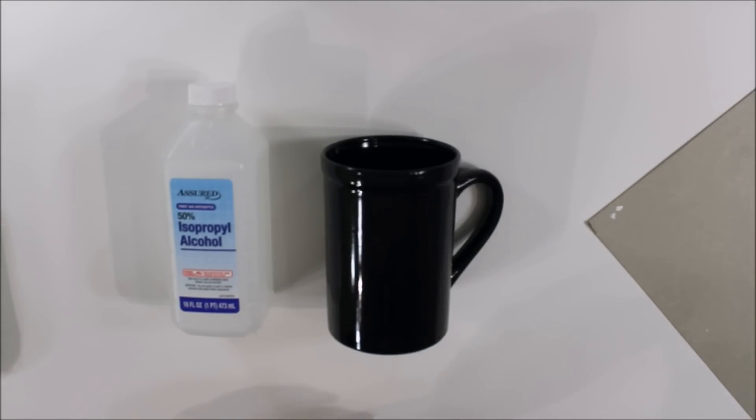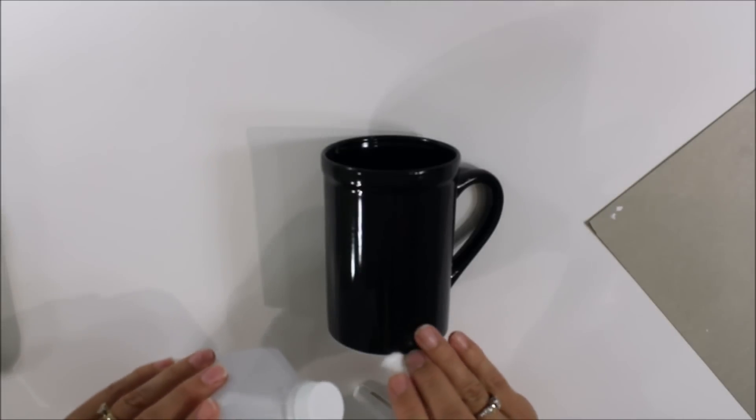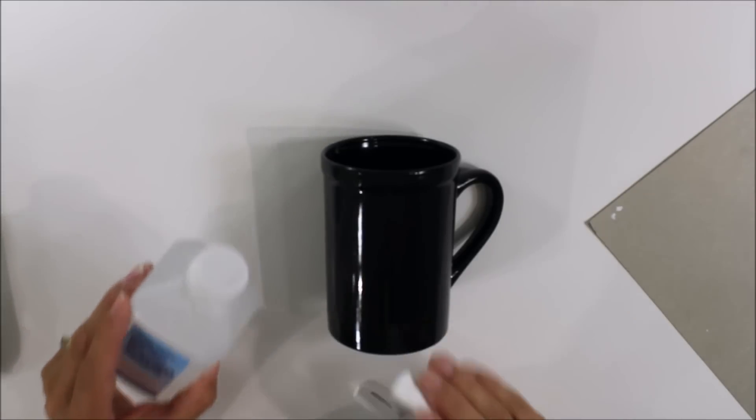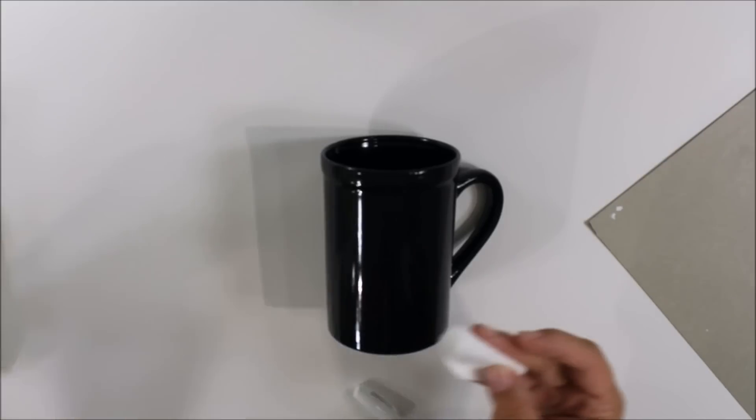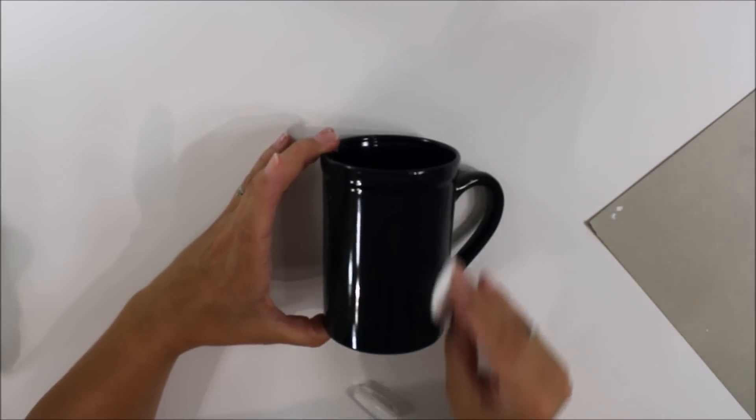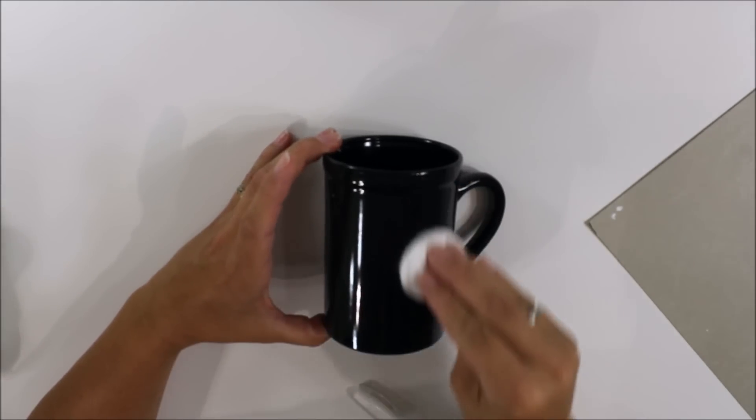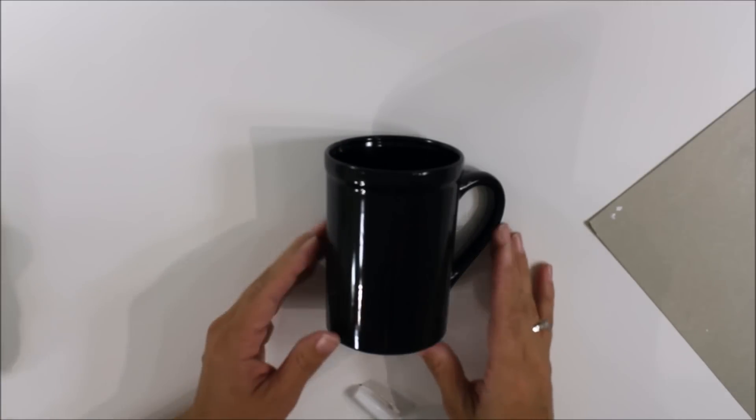Another very important step is to take our rubbing alcohol. I've already cleaned this cup so I'm not going to do it on camera, but dab a little bit of rubbing alcohol on your cotton swab, and you want to be sure to clean your mug thoroughly where we're going to be placing the design. And then you're going to have to wait a moment or two for that to dry.